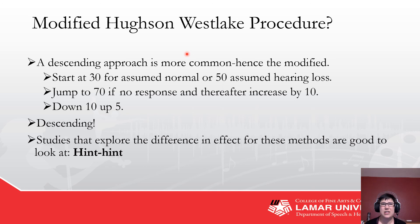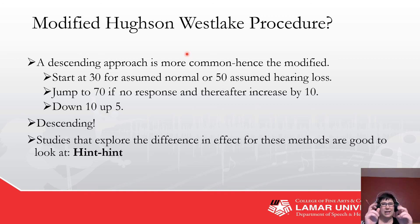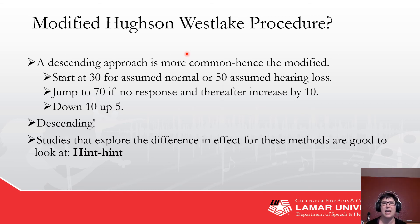The difference in effects between ascending and descending methods is worth reviewing — there are articles on that. If you suspect a malingerer, you want to do ascending — it's easier to catch them. Be careful about calling somebody a liar or cheater, or throwing around the term malingerer. But most people, descending works just fine.